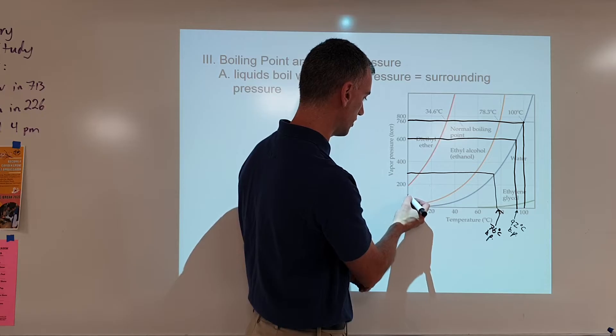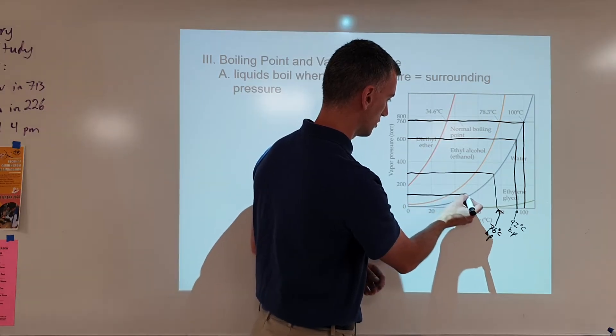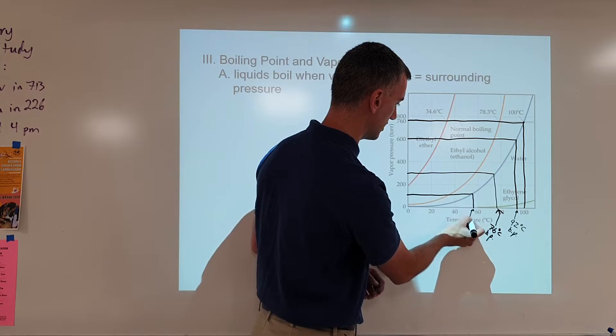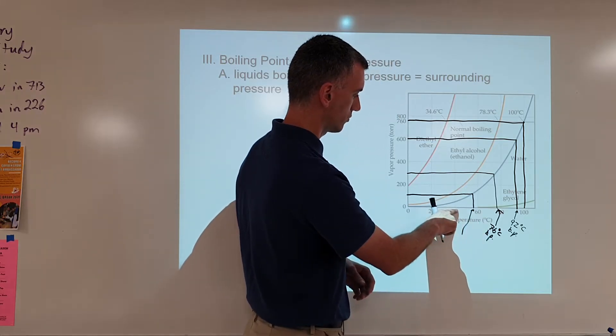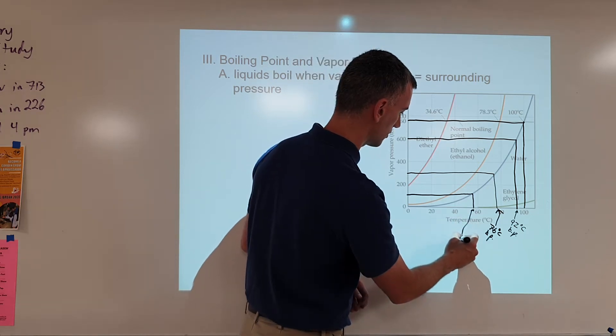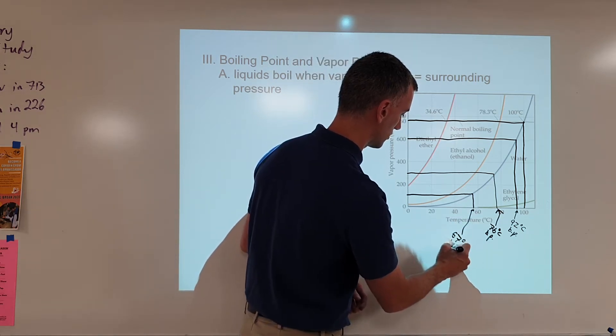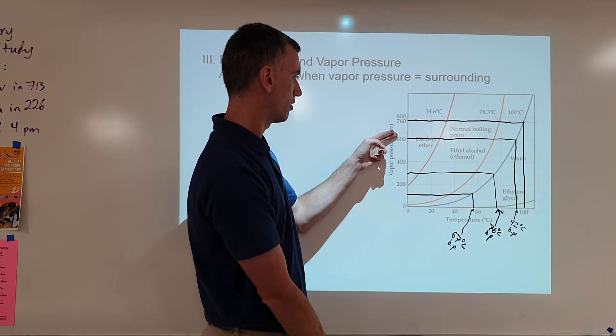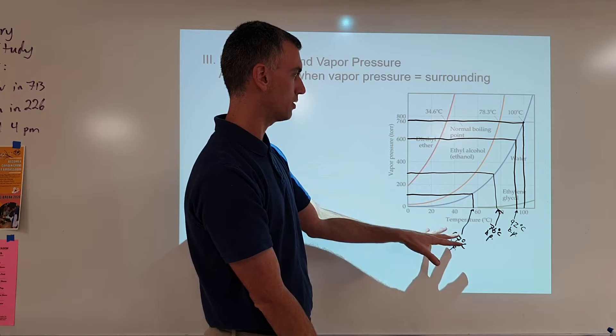Let's see, maybe at 100 torr water would boil at approximately, what is that? 40, 50, 57 maybe? At 200 torr. Okay, so this is what I mean. The lower the pressure, the lower the boiling point.